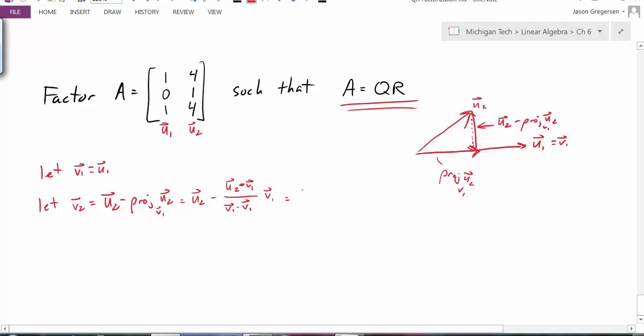Now we just need to put in the actual pieces. U2 is 4, 1, 4 minus U2 dot V1. Well, U1 is the same thing as V1, so that's essentially V1. And U2 is right here, so it's really the dot product of these two vectors.